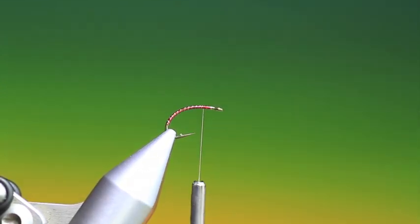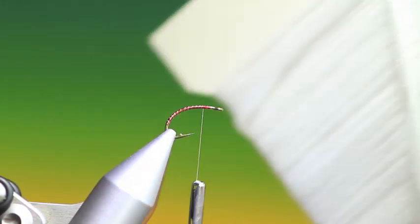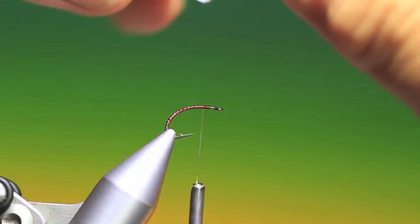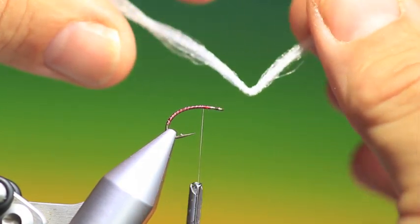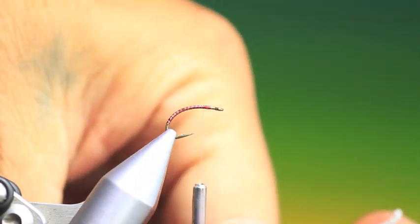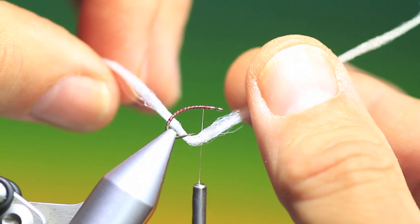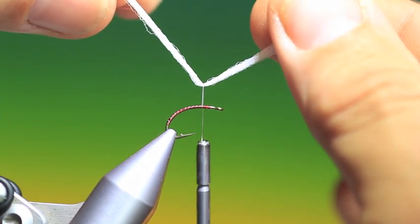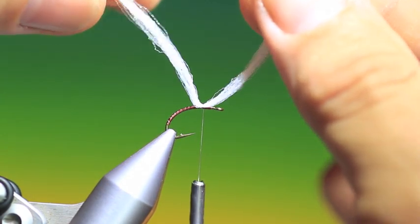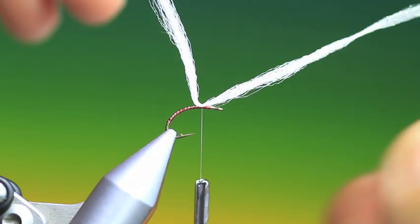And when we get to about there we cut a piece of white poly yarn. And you see when you take it off the card you get a fold in it, so we just place the fold around the hook bend like that. We lift the thread up and position the poly yarn.